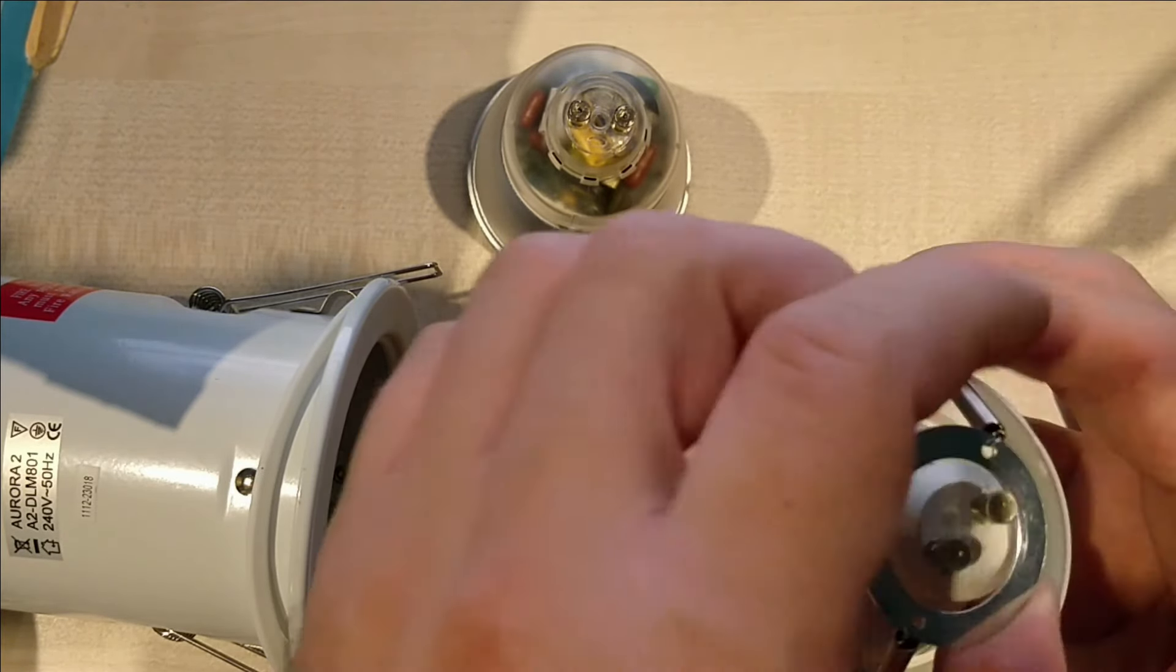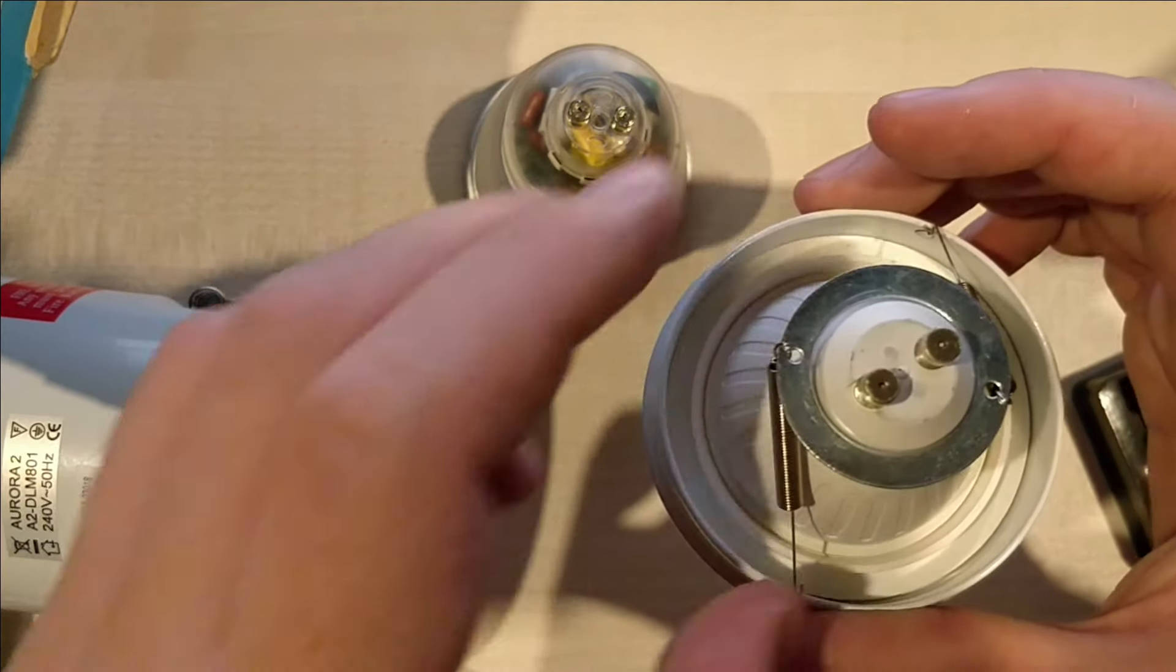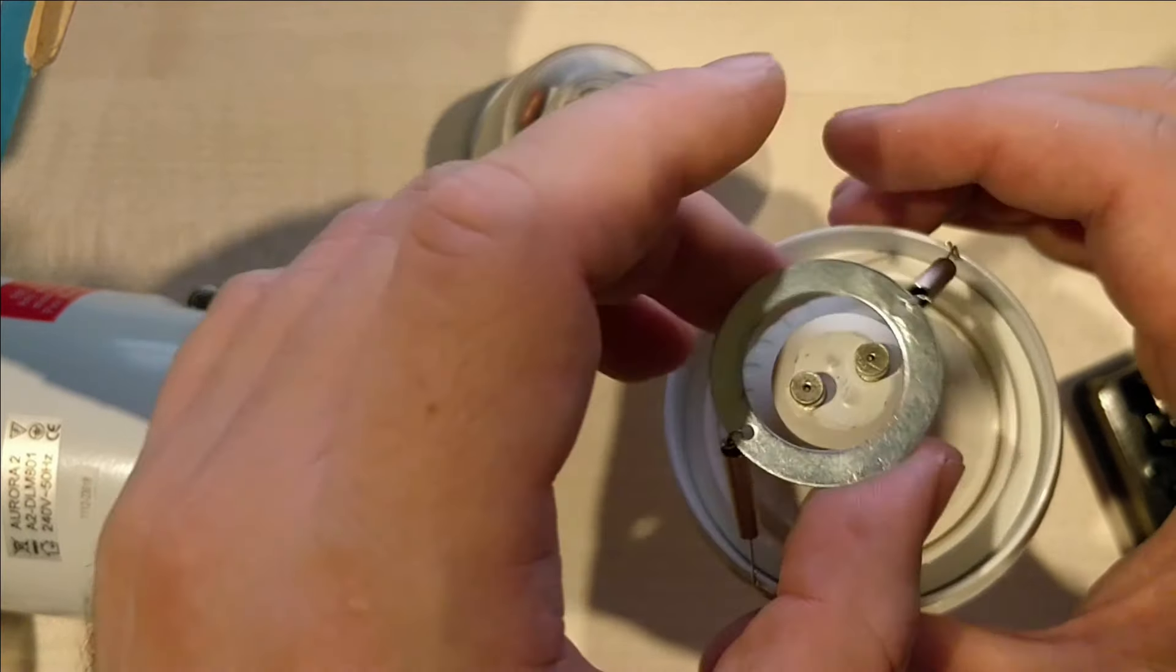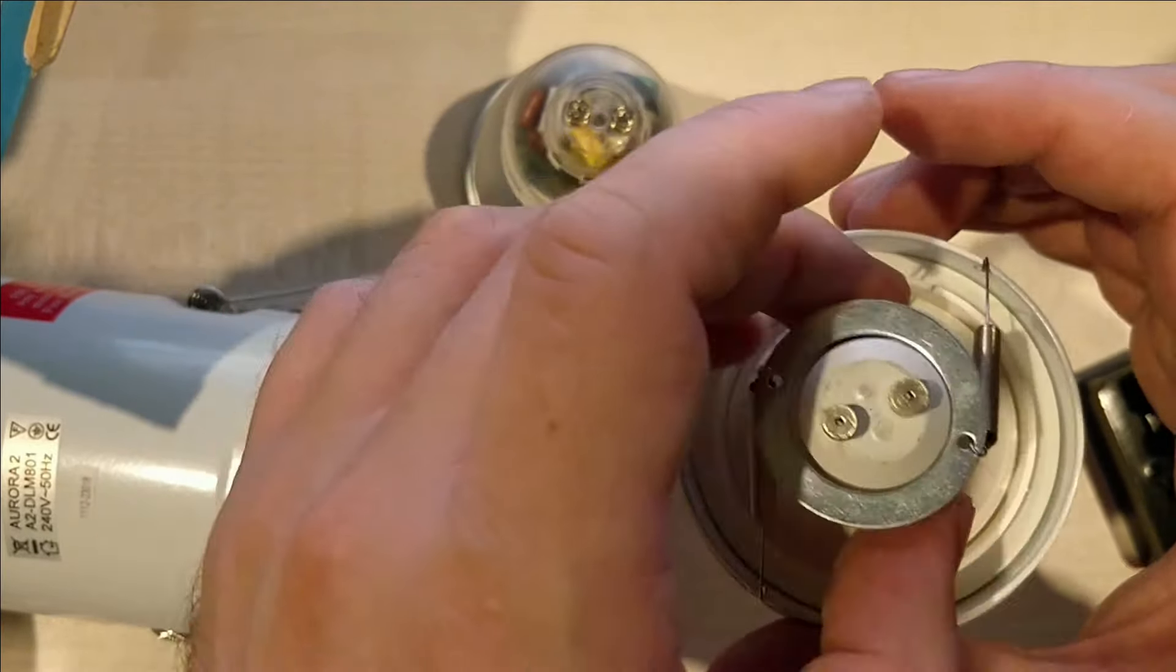But it still doesn't really catch on the spring very well. You can see the spring is not under tension. The light bulb is not, it's just kind of loose in there. It's not being held in.